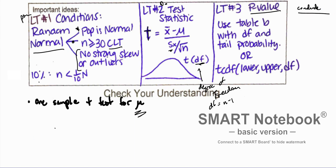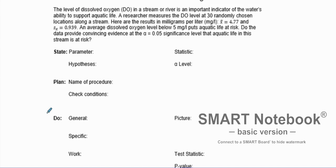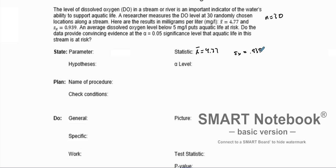Let's go through one example problem. The level of dissolved oxygen in a stream or river is an important indicator of the water's ability to support aquatic life. A researcher measures the DO level at 30 randomly chosen locations along the stream, so our n value is 30 — right where we need it for the central limit theorem. Our sample mean is 4.77 milligrams per liter and our sample standard deviation is 0.939.